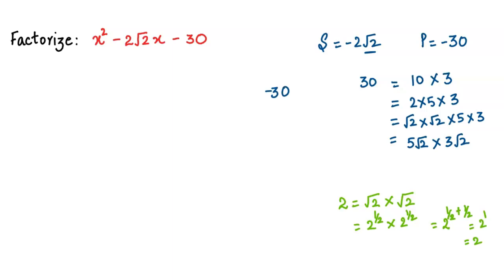Which of these two factors should be negative? That is decided by looking at the sum, which should be -2√2. That means we want a negative sum, so the bigger factor has to be negative.